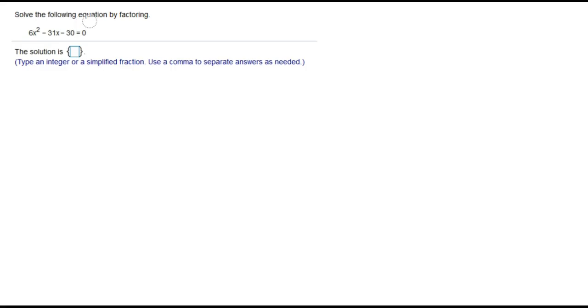This question says solve the following equation by factoring: 6x squared minus 31x minus 30 equals 0. So this is a quadratic equation because we have the x squared there, and the directions want us to solve by factoring.